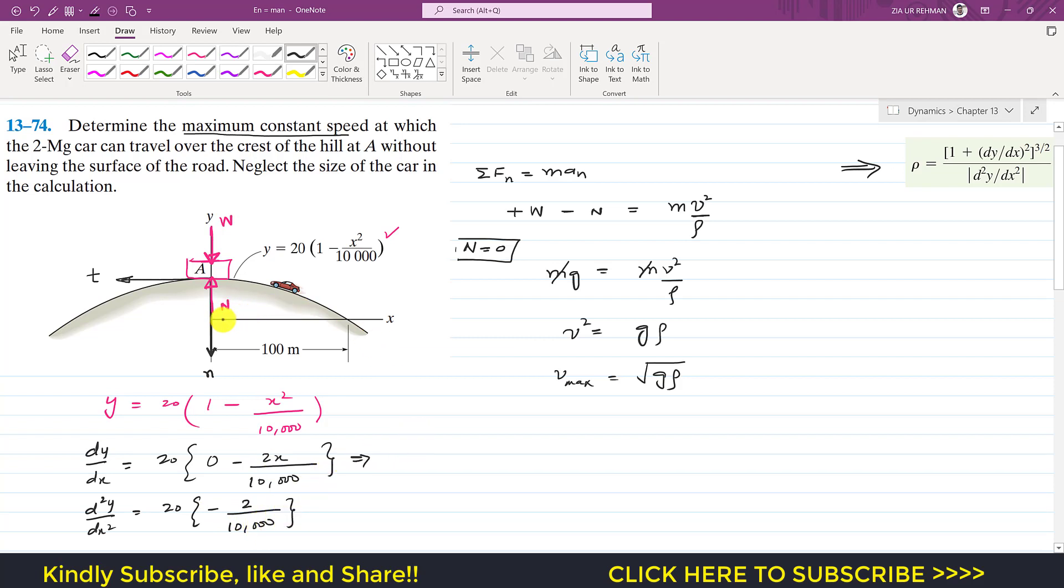So again that is 20 and again now the derivative of this is minus 2 divided by 10,000. And at A, since this is the origin here, we have that origin, so at A the x is 0. So we can put this x equals to 0. So we will be able to find dy by dx at x equals to 0 since we want to find the radius of curvature at that point A.